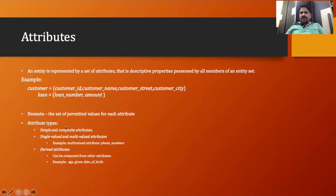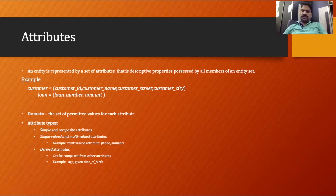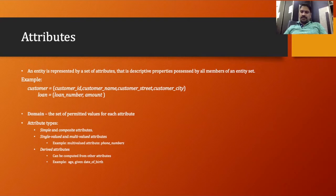Now let's understand different types of attributes. We have simple and composite attributes. A simple attribute is one which has a single value. A composite attribute is a combination of different attributes — for example, name which has first name, middle name, and last name is called composite. Similarly, address is also a composite attribute.